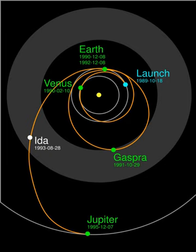The primary mission ended in December 1997, two years after Jupiter arrival. The Galileo mission used a two-character code to specify each orbit. The first character was the first letter of the name of the moon that would receive a flyby on that orbit, while the second character indicated the number of the orbit.